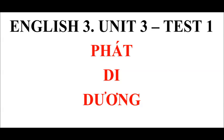English 3, Unit 2. That is his ruler. 1: that. 2: his ruler. 3: look. 4: his book.